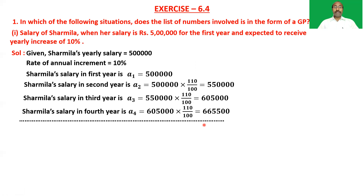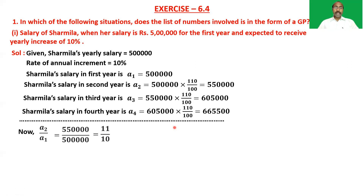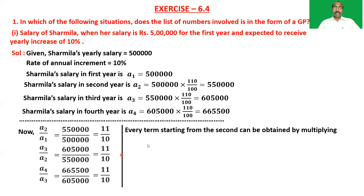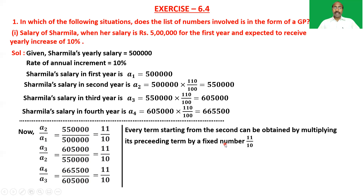Now let us verify whether these terms are in geometric progression. a₂/a₁ equals 5,50,000 by 5,00,000 which is 11/10. a₃/a₂ equals 6,05,000 by 5,50,000, which simplifies to 11/10. And a₄/a₃ is also equal to 11/10. The common ratio throughout the sequence is the same. Every term from the second onward is obtained by multiplying the preceding term by 11/10. Hence, the given terms are in geometric progression.